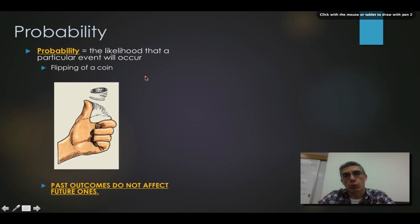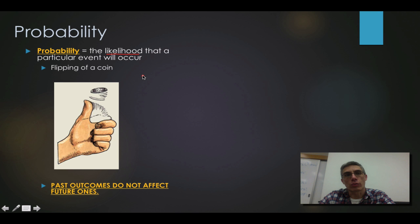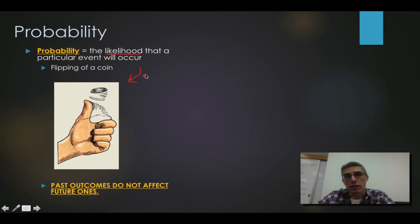If you think about Mendel's work with his garden peas, he was following specific traits through several generations, and he was taking that data and analyzing it to see what was the likelihood that those traits would appear in the next generation. Probability is a concept that you guys have looked at in math class, and the easiest way to understand probability is to simply look at the diagram right here.